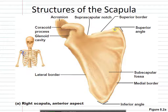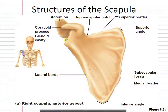When they refer to the angles, they're talking about the points — the superior angle and the inferior angle. These three processes you have to know. The first is that little dip or groove called the glenoid cavity or glenoid fossa — that's where the humerus sits. The next is the coracoid process, an attachment point for muscles, ligaments, and tendons. And the last is the acromion process, all the way at the very end of the spine.